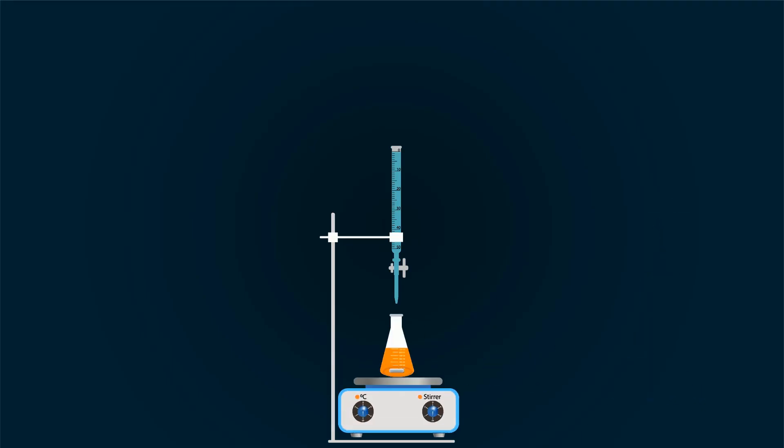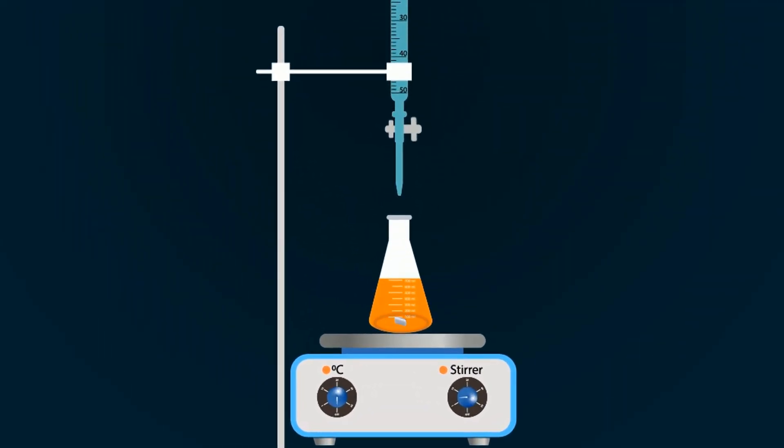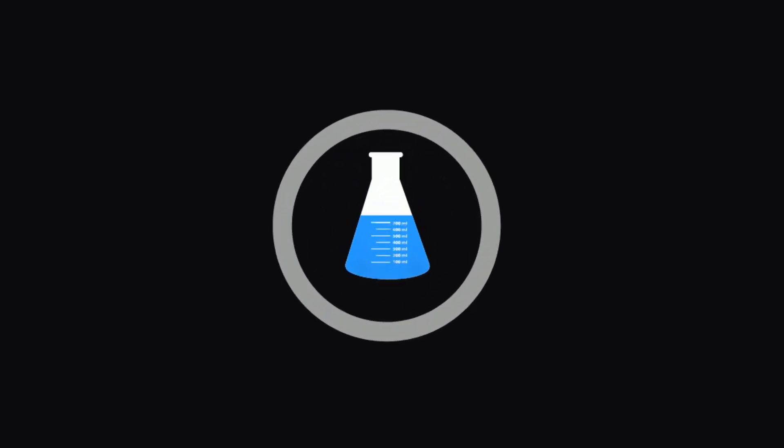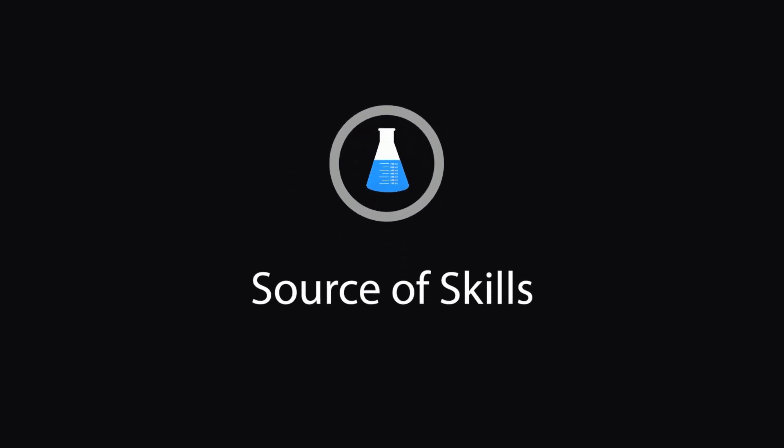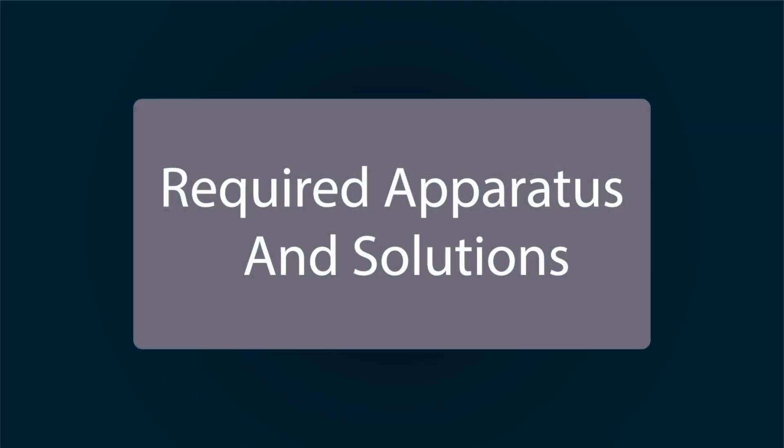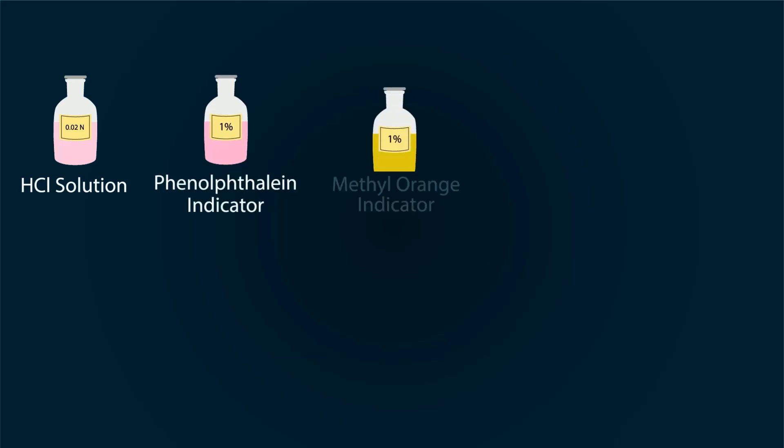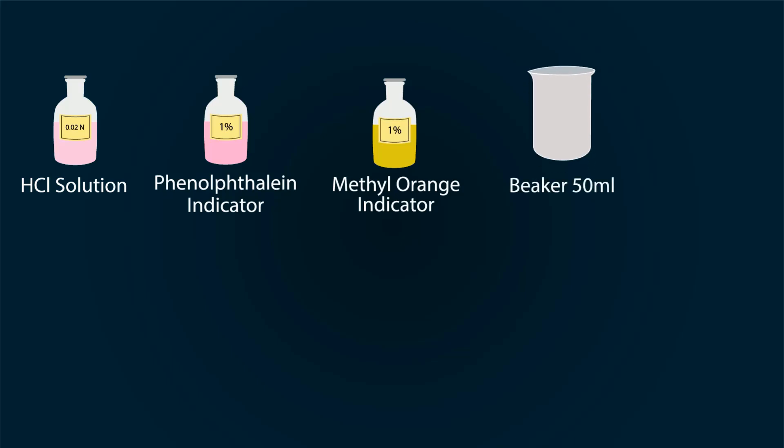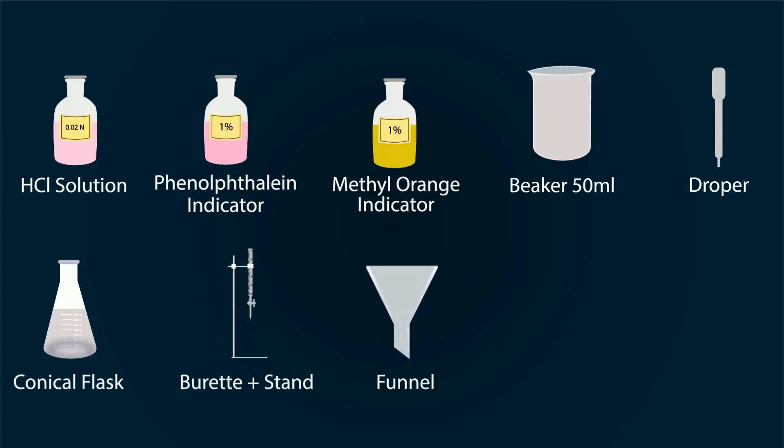In this video, you will learn how to do alkalinity tests on water. The required apparatus and solutions include 0.02 normal HCl solution, 1% phenolphthalein indicator, 1% methyl orange indicator, a 50 ml beaker, dropper, conical flask, burette with stand, funnel, magnetic stirrer, and magnetic bar.